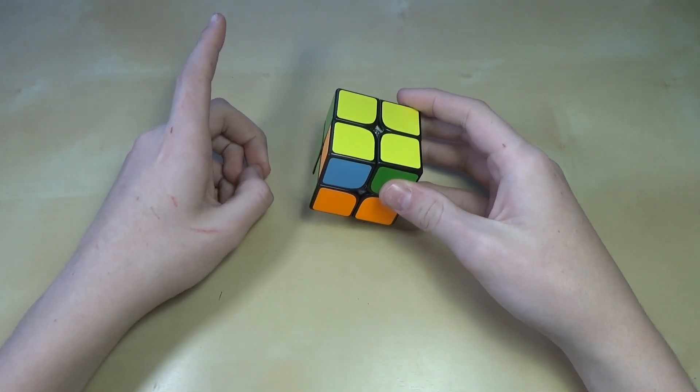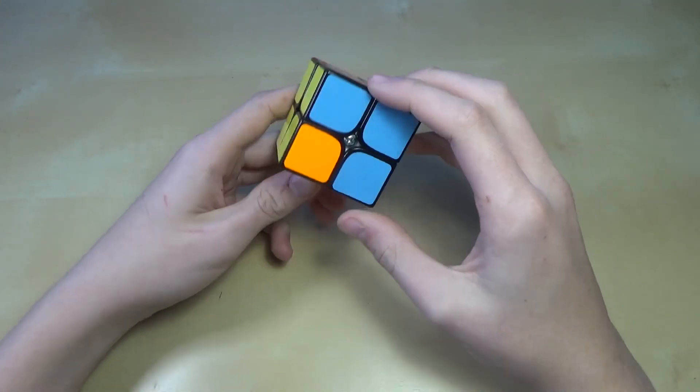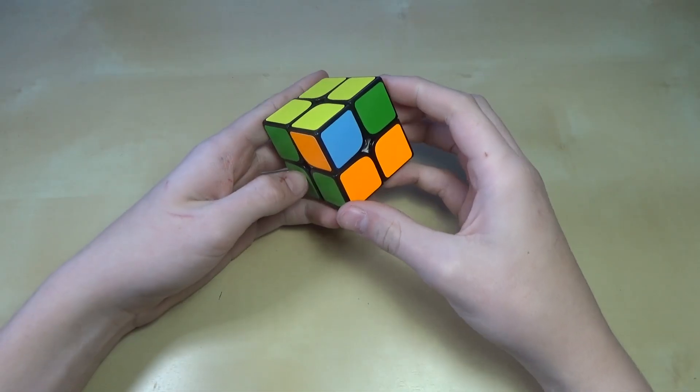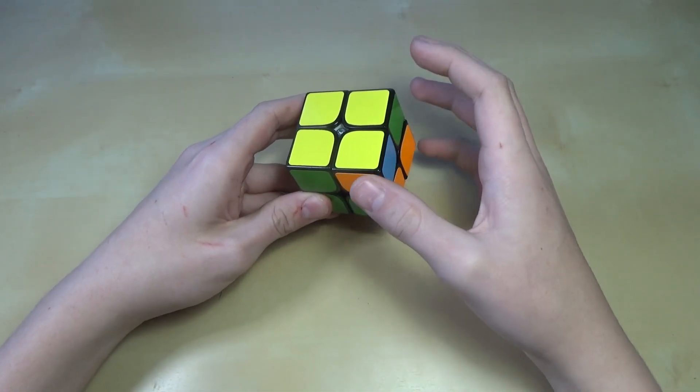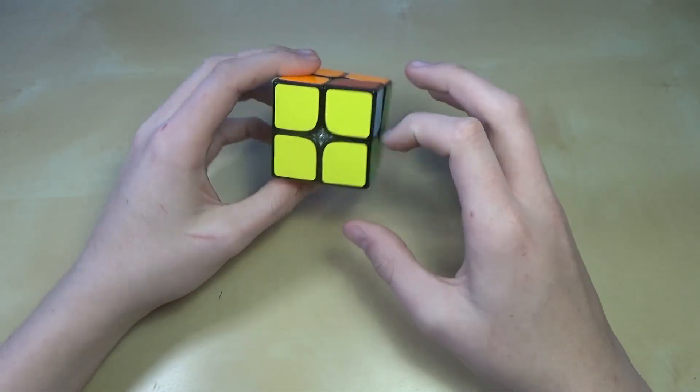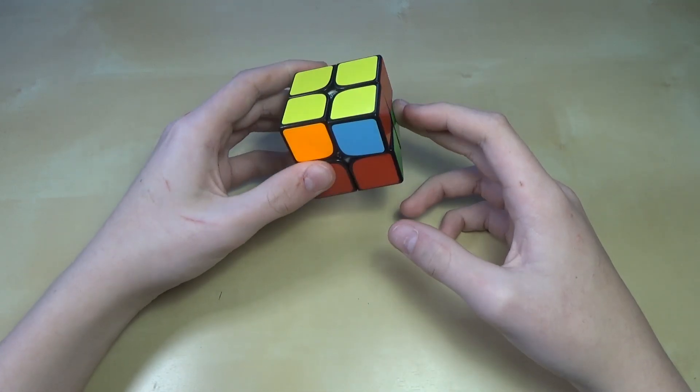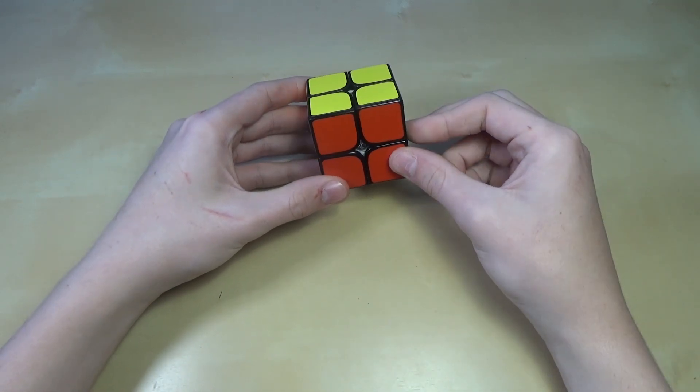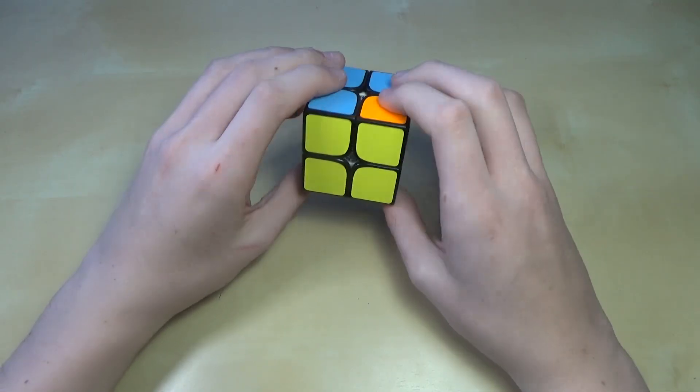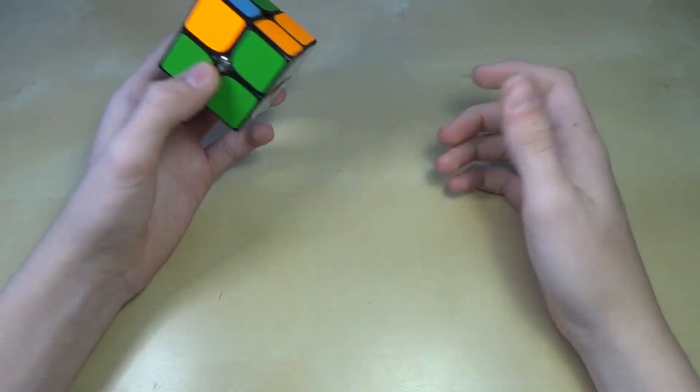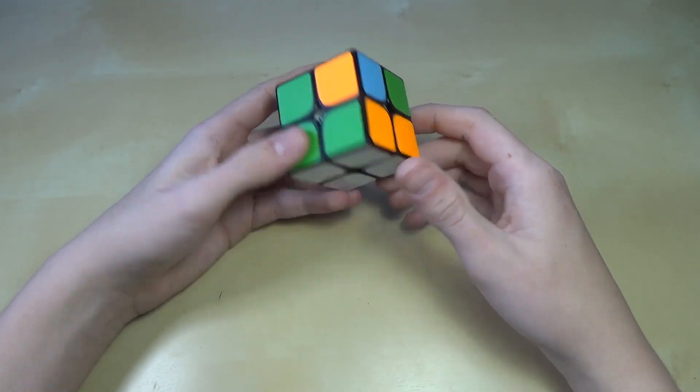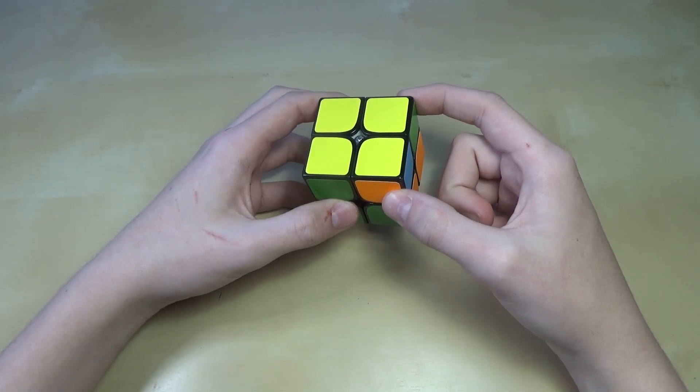And so there's one algorithm that you can use to fix this case. And so most of the time, it'll either look like this, where you have these two pieces switched, or like this, where you have these two pieces that need to kind of switch opposite like that. And so first, to solve this first case, what you want to do is just line it up like this. And this is called a T-permutation. You may know this from other places, but it's just called a T-permutation. What you do is you line up these two pieces at the top right here.